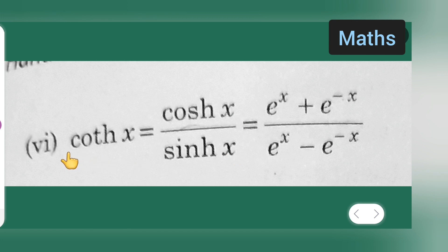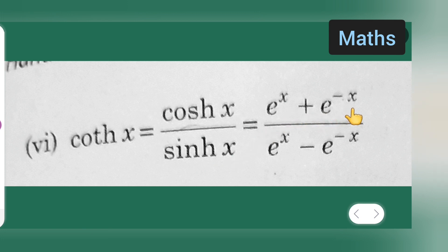The sixth one is cot hyperbolic x, which is equal to cos hyperbolic x upon sine hyperbolic x, which is equal to e raised to the power of x plus e raised to the power of minus x, upon e raised to the power of x minus e raised to the power of minus x. I hope you all have understood all these hyperbolic functions — thanks for watching.